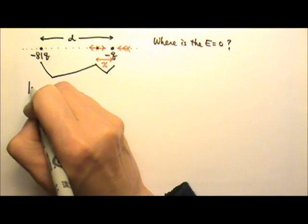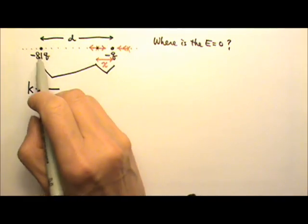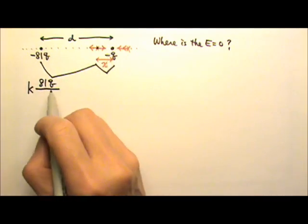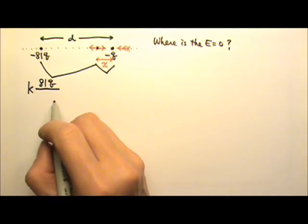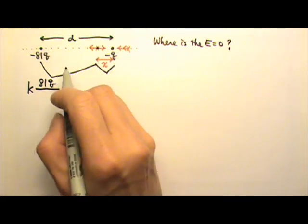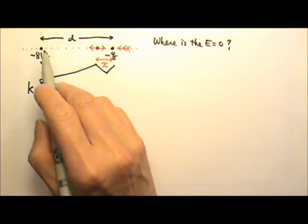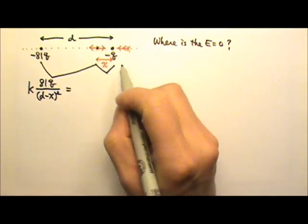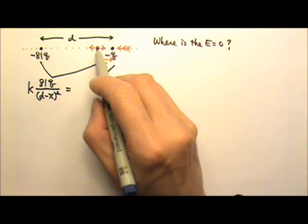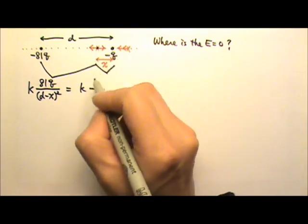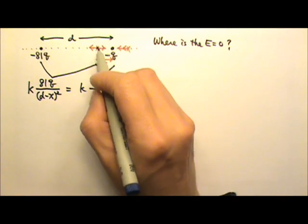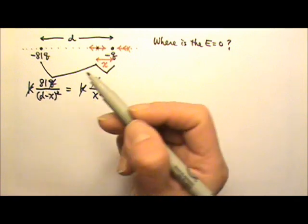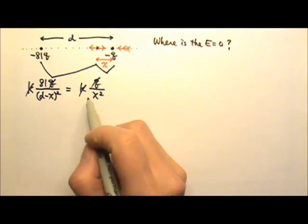The field produced by a point charge is kq over r squared. For the 81q charge, I do not plug in the sign — I only use the equation to find the magnitude of the field — and the distance is d minus x. The field produced by the negative q is k times 1q divided by x squared. So the k's cancel and the q's cancel.